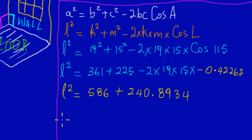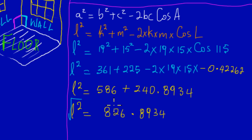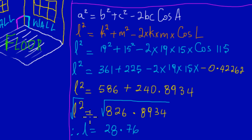Adding those together: l² = 826.89. To find L we take the square root of both sides. Therefore l = √826.89, which gives approximately 28.76.